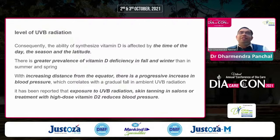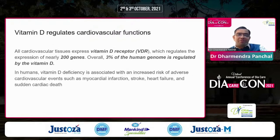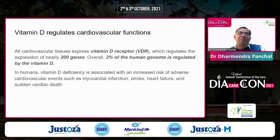Greater prevalence of vitamin D deficiency is observed in fall and winter rather than summer and spring. With increased distance from the equator, there is a progressive increase in blood pressure, correlated with a gradual fall in UVB radiation. Exposure to UVB radiation, skin tanning, and treatment with higher doses of vitamin D2 can reduce blood pressure. Vitamin D regulates cardiovascular function — cardiovascular tissue has vitamin D receptors that regulate nearly 200 genes, and 3% of the human genome is regulated by vitamin D. Vitamin D deficiency is associated with increased risk of adverse cardiovascular events including myocardial infarction, stroke, heart failure, and sudden cardiac death.